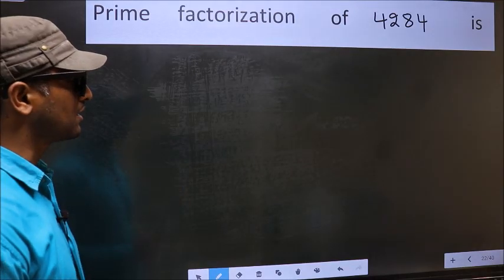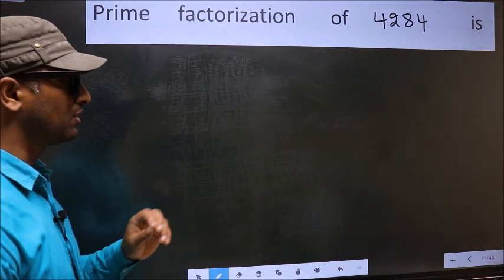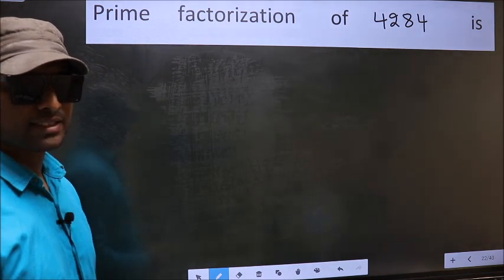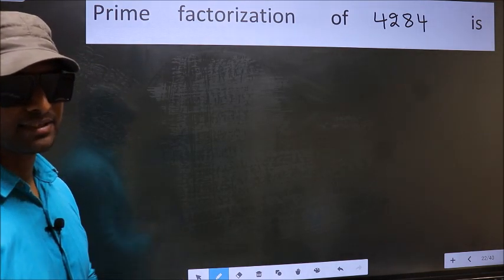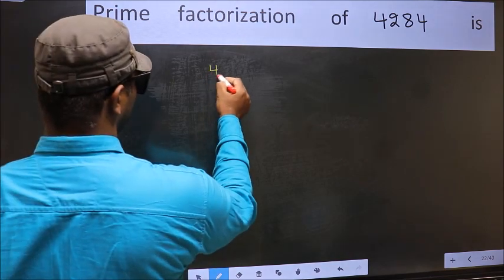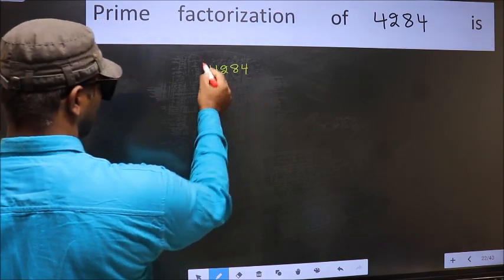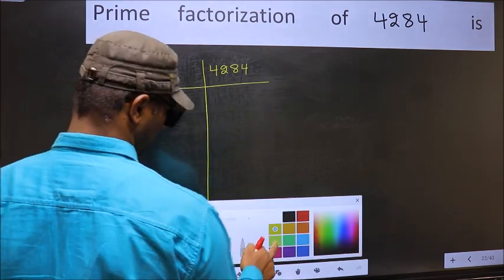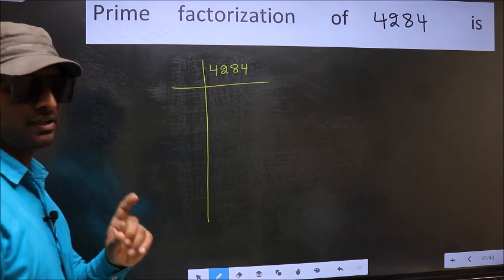Prime factorization of 4284. To do prime factorization, first we should frame it in this way: 4284. This is your step 1.